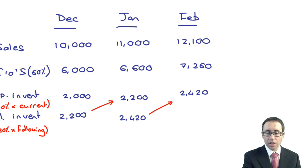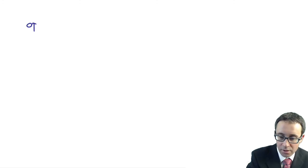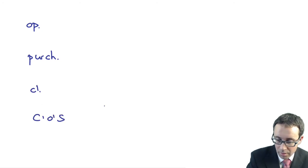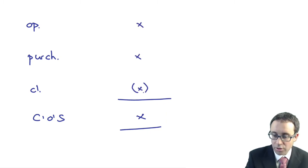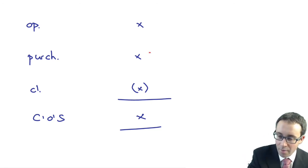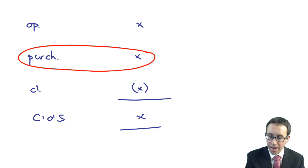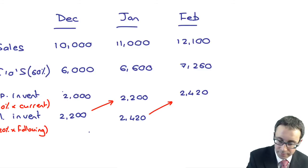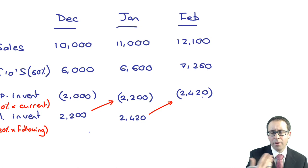What we've got now is we just need to rearrange things. If you're thinking about cost of sales: opening inventory plus purchases less closing inventory gives you cost of sales. So to work out purchases, you add closing inventory to cost of sales and deduct opening inventory. Purchases equals cost of sales plus closing inventory less opening inventory.